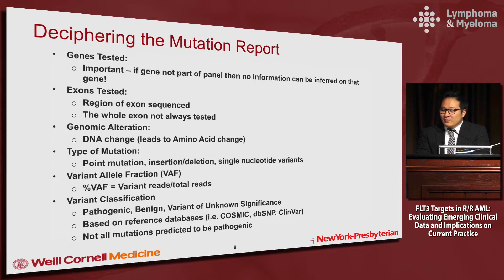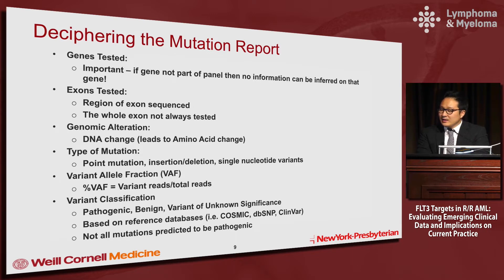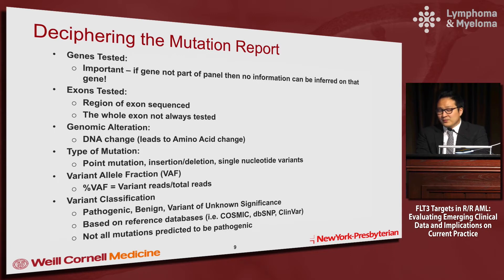You also get a percentage VAF — variant allele fraction. In NGS you get many reads for a region of interest and divide by the total reads; it's a gauge of what percentage of reads confer that mutation. Reports also include a classification: pathogenic, benign, or variant of unknown significance (VUS). The lab looks through known databases like COSMIC to predict which mutations may be pathogenic versus benign. A VUS is a mutation not previously found in those databases.